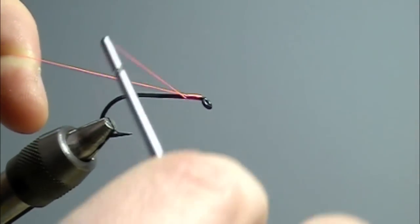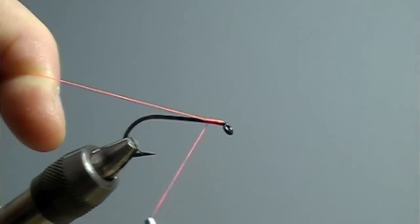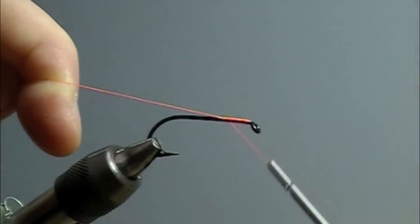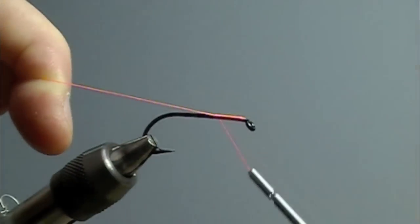You can see I hold the thread off at an angle and the reason why I do that is that it forms a little ramp for that thread to slide down and then line up directly in back of the last wrap.